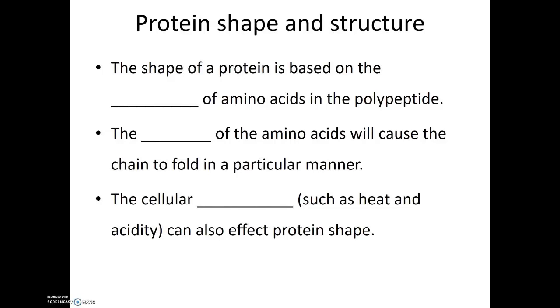The shape of a protein is essential for its function. So what determines that shape? Well, the most important aspect of that is the sequence of the amino acids. The order in which those amino acids are connected to each other will end up determining the shape of the protein. It will cause this chain of amino acids to fold in a particular manner. Another aspect that plays a role in determining the final shape of a protein is the cellular environment. Heat and acidity can end up impacting the shape of a protein.